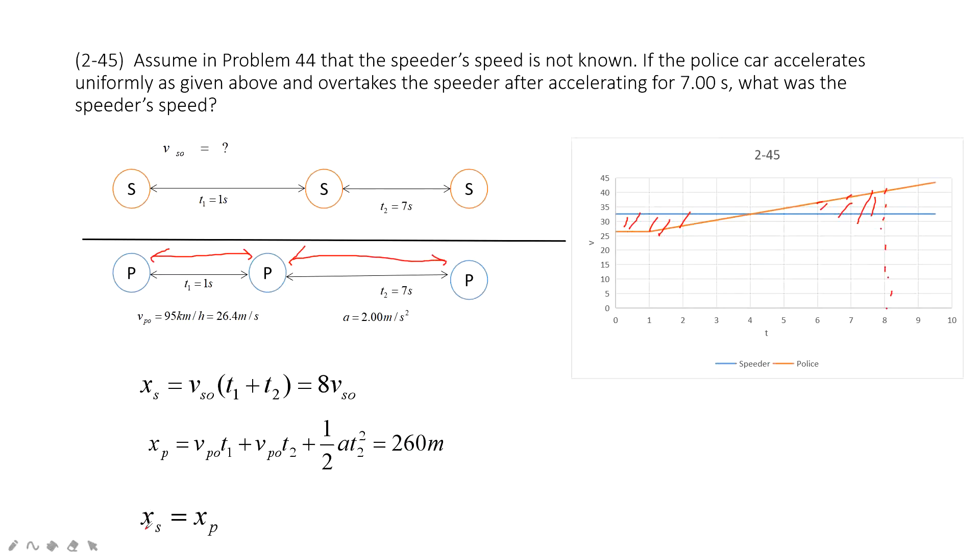And then, the displacement for speeder and displacement for the police are the same, they are equal. Then, we can get the initial velocity for the speeder is 32.5 m per second.